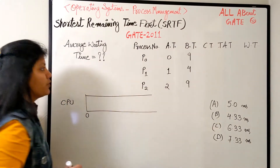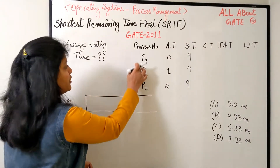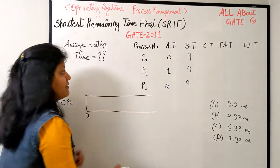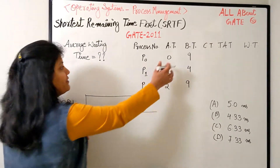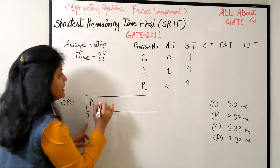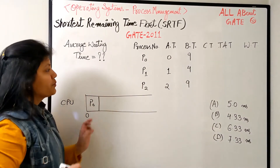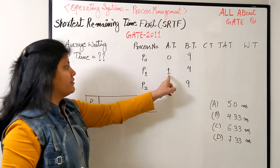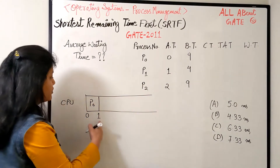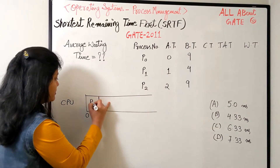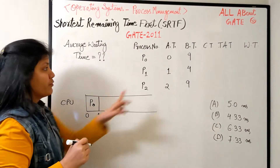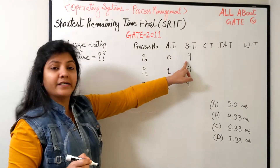At time zero we have three processes P0, P1, and P2 with their respective arrival times. At time zero we have just one process in the system, that is P0, so let's schedule it. We run process P0 for one burst and find that P1 is available. So from 0 to 1, P0 is scheduled.